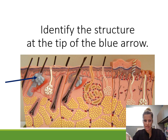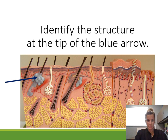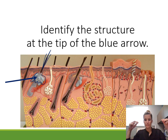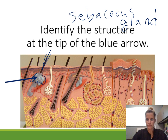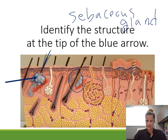Identify the structure. Back to the integumentary system — this is one of the glands. There are glands that make oil and glands that make sweat. This one makes oil and is associated with the hair follicle — that's why your hair gets oily after a few days without washing. It's a sebaceous gland. The other image also shows a sebaceous gland just cut open so you can see inside.